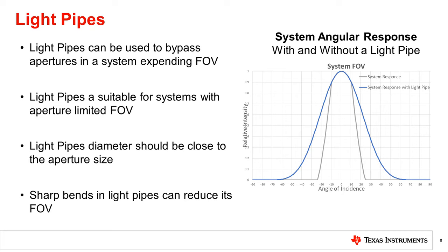For ambient light sensors, a light pipe can be used to bypass the angular limitations of apertures in the system. In effect, we can bring the sensor to the top of the light pipe, reducing the distance between the aperture and the sensor, increasing field of view. As an example, take a look at the displayed system angular response plot in grey — a system severely limited in field of view by a window aperture. If we add a perfectly placed light pipe between the sensor and window, we will increase the system angular response to be very close to the sensor's angular response, as shown in blue.